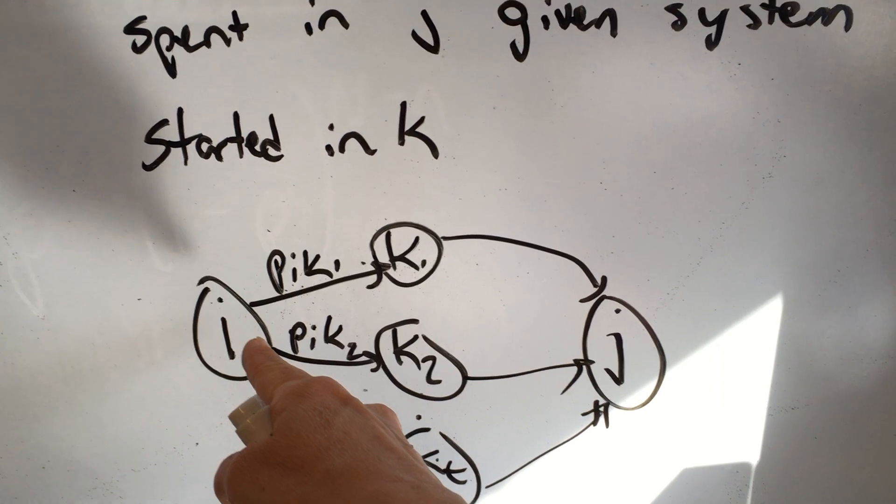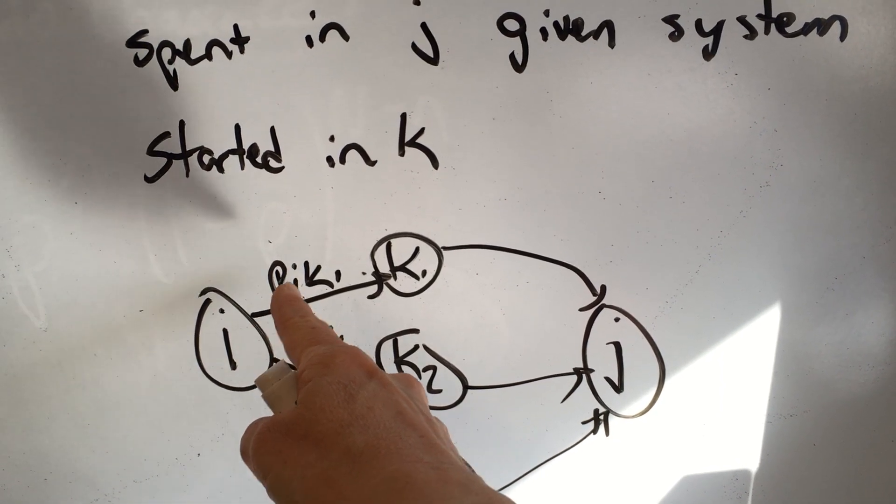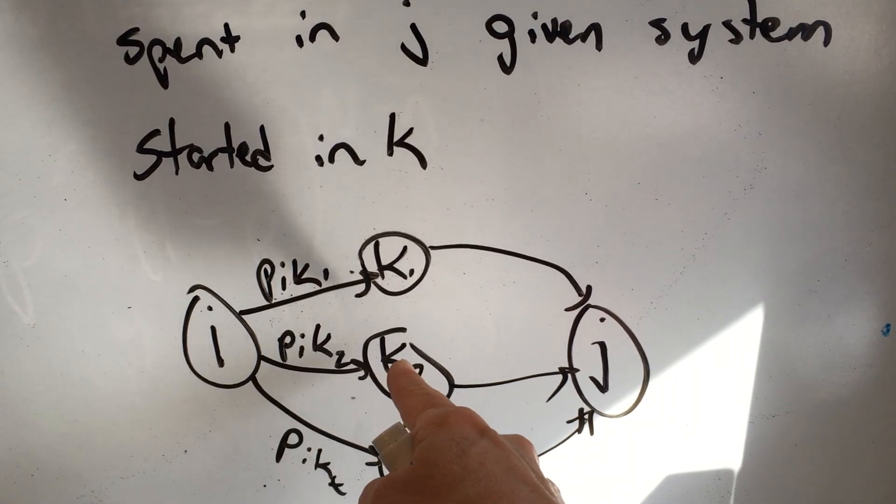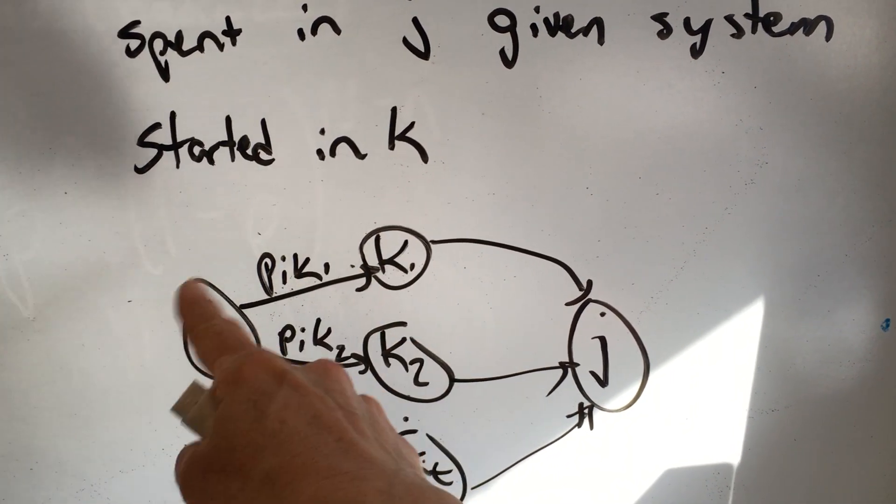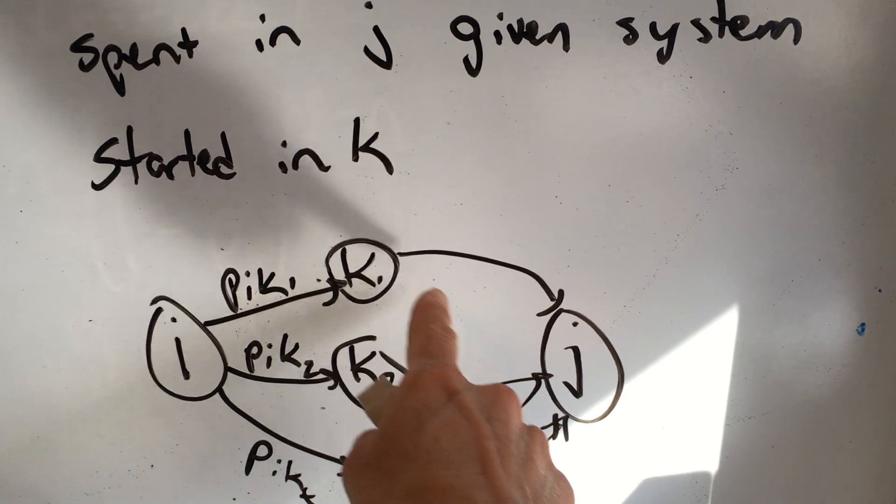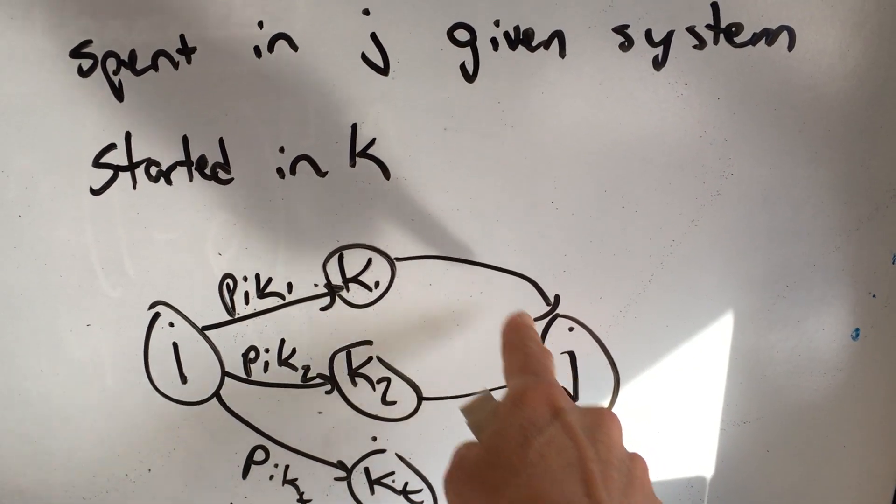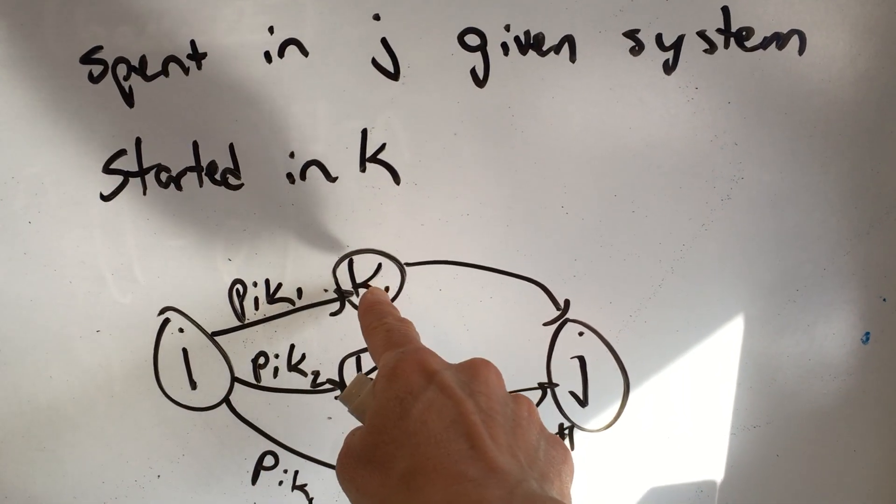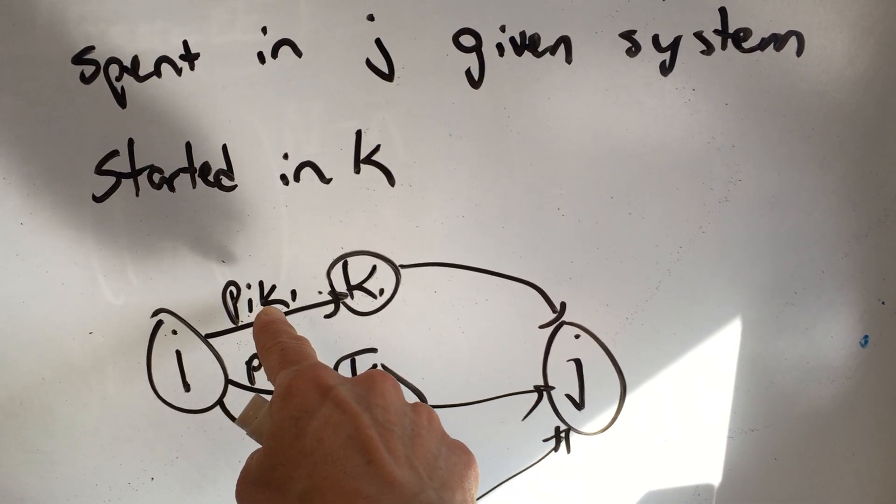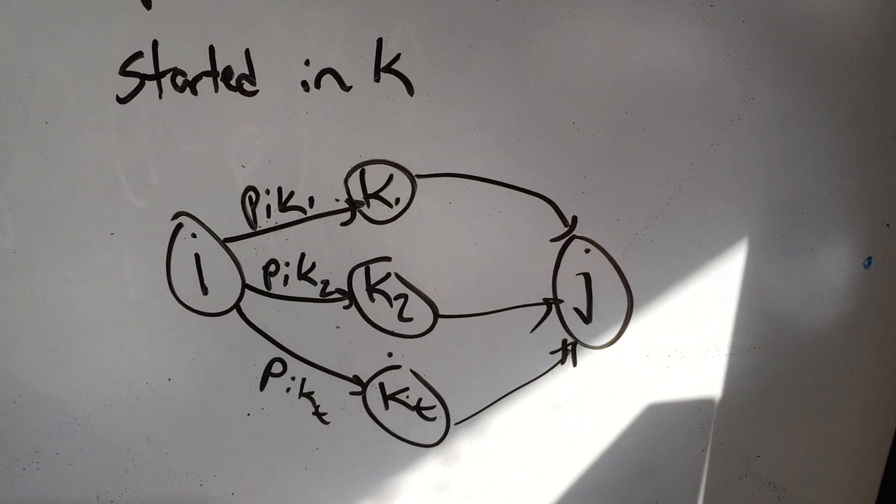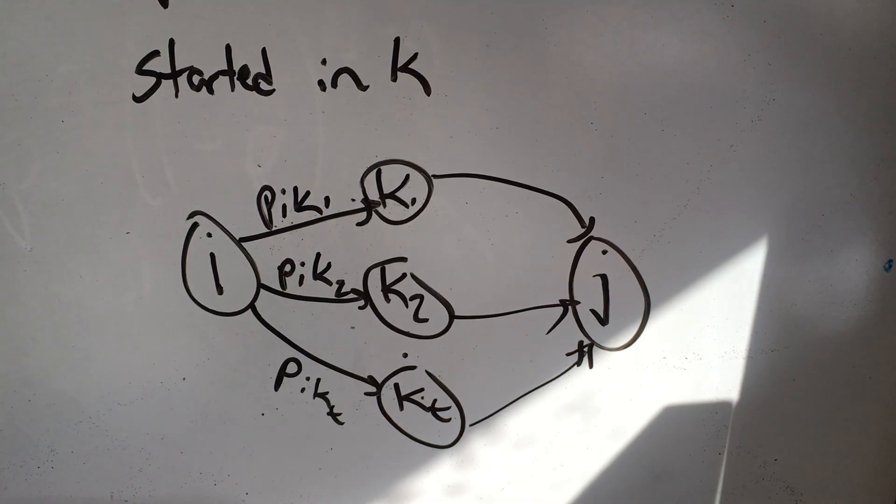So if I start it over here, and then I'm going to look at the probability of going into any one of my intermediate possible states, which also could be I, by the way, if it can go back to itself, times the expected number of time periods I spend in state J, given that I start in state K. So I kind of score a point here, but I'm conditioning on the probability of getting here. So watch this video again if you need to, and next we'll go on to the matrix math.